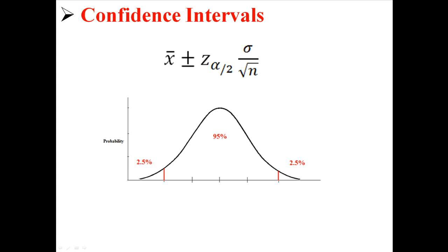In the interval we're creating, which is this part right here in the center. If we're 95% confident, we're basically accepting a 5% chance that it's going to fall outside of that range. This is called alpha, 0.05.